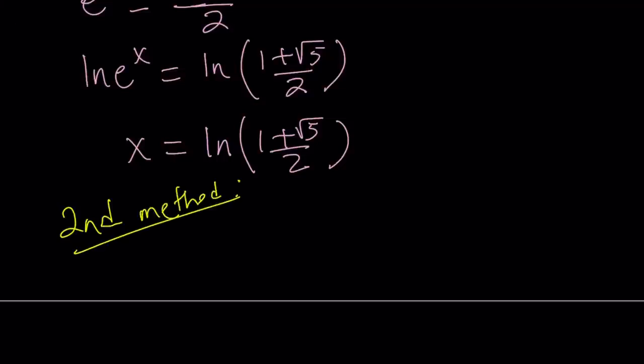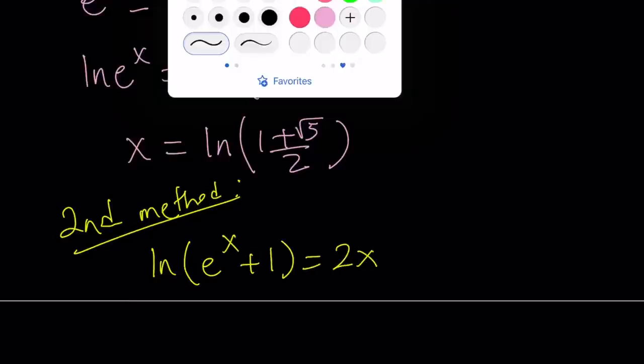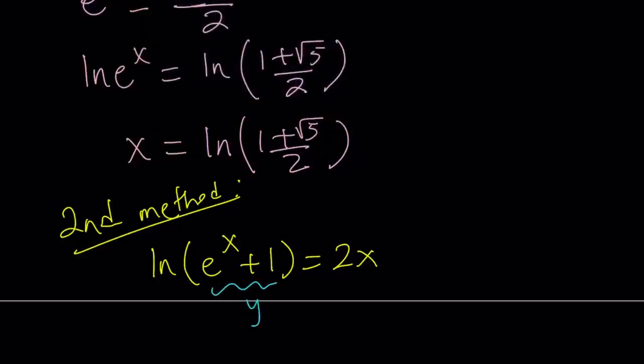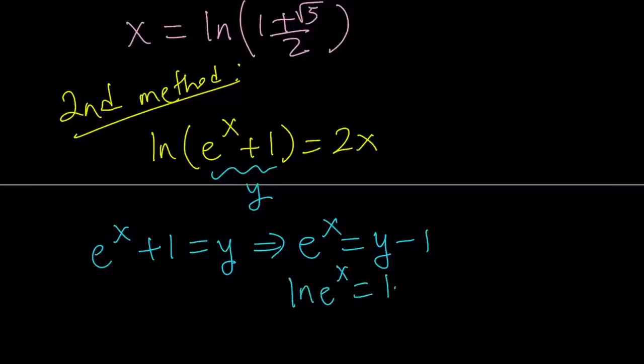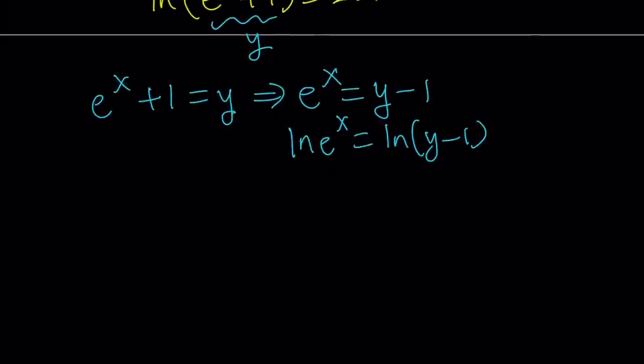So my second method is very similar to the first one, except I'm using a little substitution here. So, I have something inside the parentheses. It makes sense if I call that something, like how about y. If you set e^x + 1 equal to y, then from here, e^x becomes y - 1. And if you ln both sides, you get ln(e^x) = ln(y - 1). And then from here, you get x = ln(y - 1).